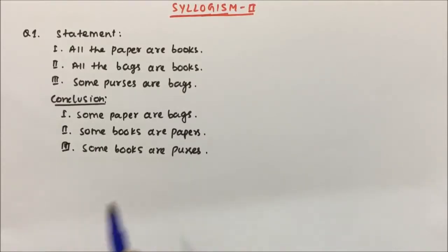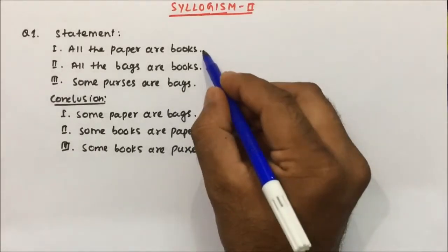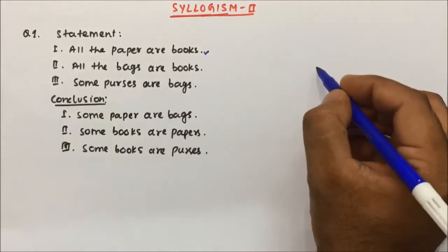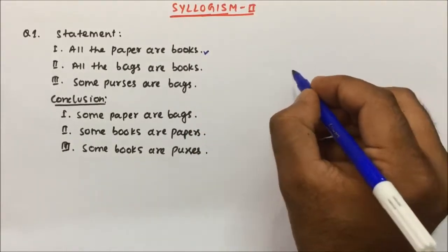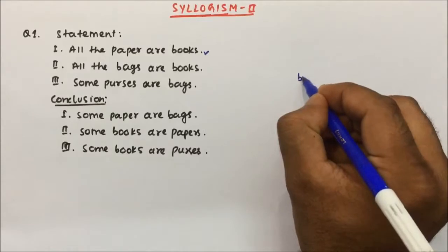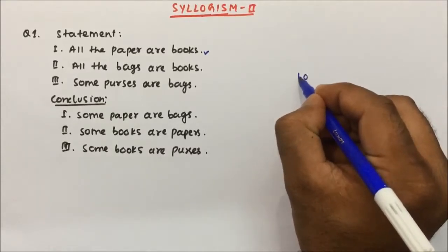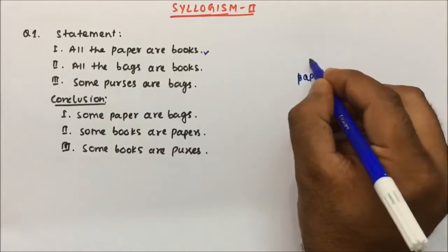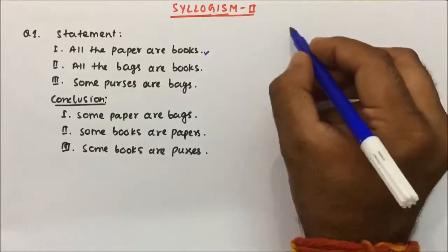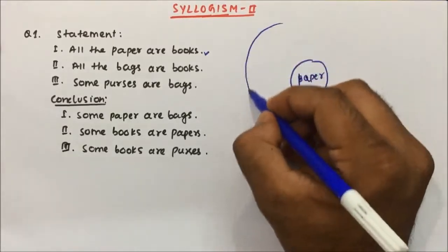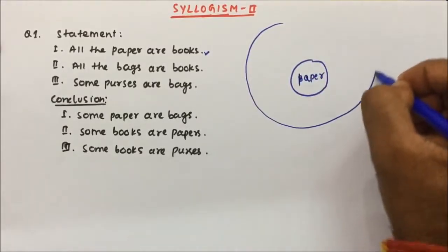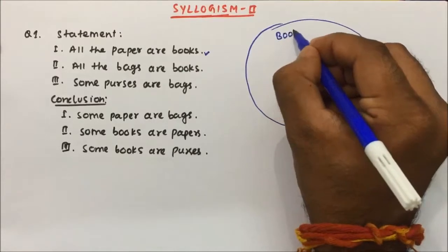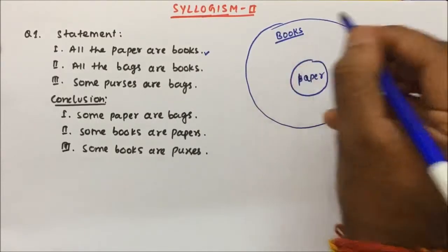Question number 1: All the papers are books. So how do we make the Venn diagram for this? All the papers are books, so here I will write 'paper' and all these papers will be inside 'books'. I will make a big diagram, so all the papers will be inside books.